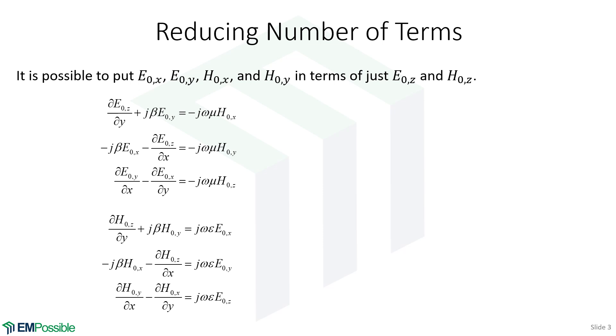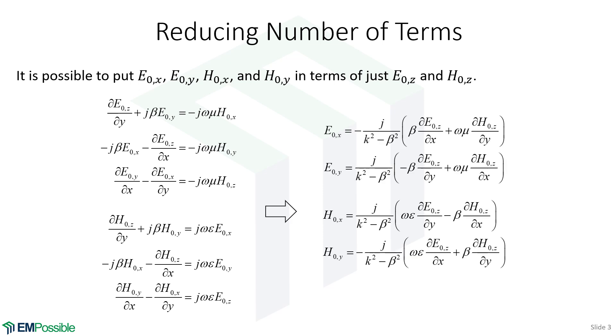It turns out, without any approximations, it's possible to put all of the tangential components of the fields, so Ex, Ey, Hx, and Hy, and I call these tangential because we're going to let the waveguide be in the Z direction. But it's possible to put all of these four terms just in terms of E naught Z and H naught Z. So when we do that, we only have two things that we have to solve for. Once we have solutions to those, we simply just plug them into the equations we derived, and we have expressions for every single field component. So it will turn out these are the four equations that do that. So let's next derive these.